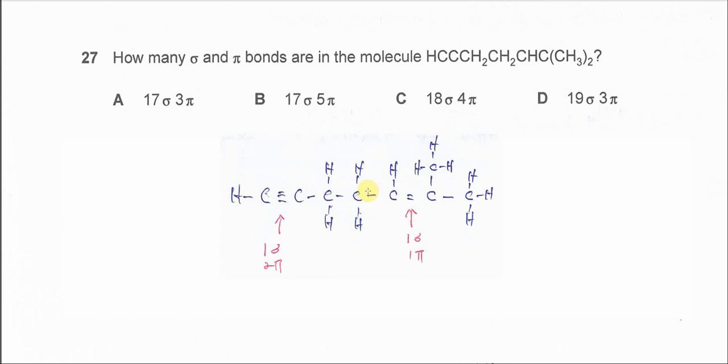Question 27. How many sigma and pi bonds in this molecule? So it's better for you to draw the structure and you know how many bonding in there. So after you draw the structure, you should get something like this.